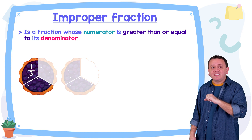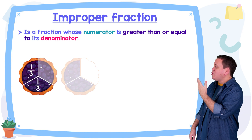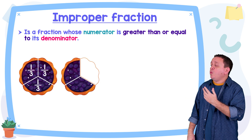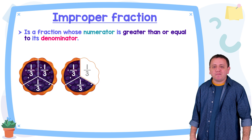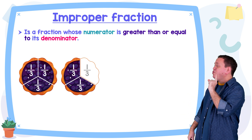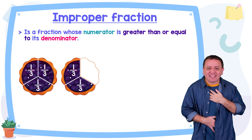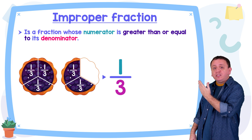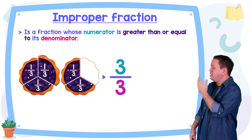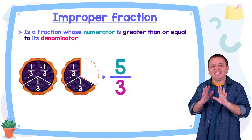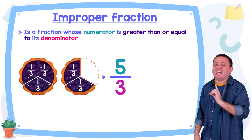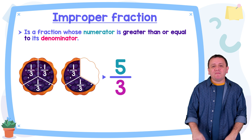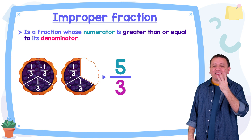The next slice also represents one third of the pie, and the next one also represents one third. The same story with the second pie: one third, one third, and one third — but we won't consider the last slice given that I already ate it. So how many blueberry pies do we have? We have one third, two thirds, three thirds, four thirds, and five thirds. We have five thirds pies. Five thirds is an improper fraction given that the numerator five is greater than the denominator three.